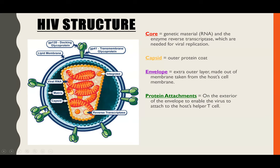The envelope around the outside is actually made up of the host's cell membrane, so that lipid membrane is taken from the host cells. The final part we can see is the protein attachments, and those are how the HIV particles are able to attach to the helper T cells.